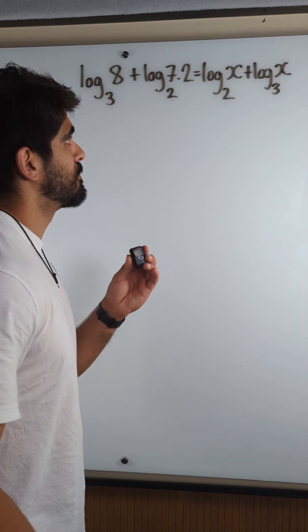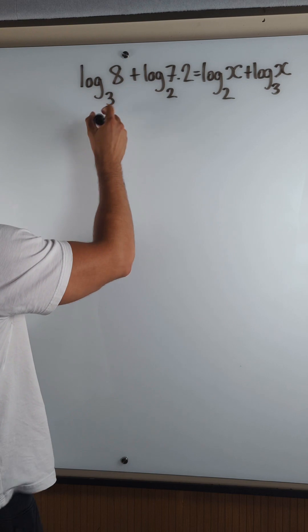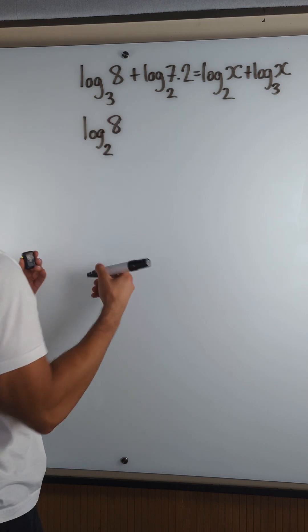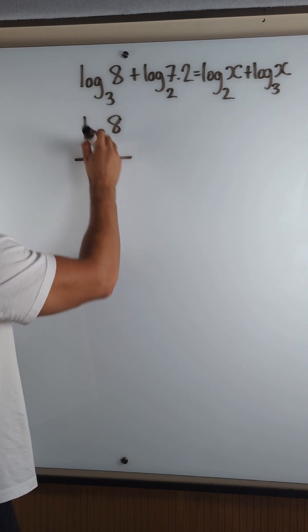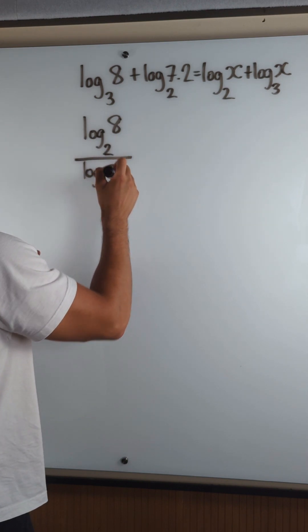So here we have to use the change of basis formula, which is actually very simple. How does it work? I want this to be log base 2 of 8. You just rewrite it, but then you divide by log base 2 of the old base.